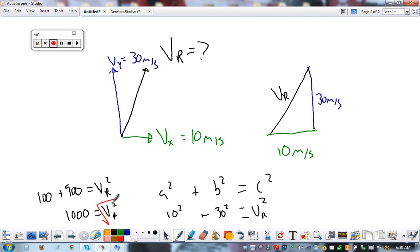Do the math. This becomes 100 plus 900 equals v r squared. 1,000 equals v r squared. Final step. Don't skip it. Square root both sides. I don't know what the square root of 1,000 is. Is it 100? And this equals 31.6 meters per second.